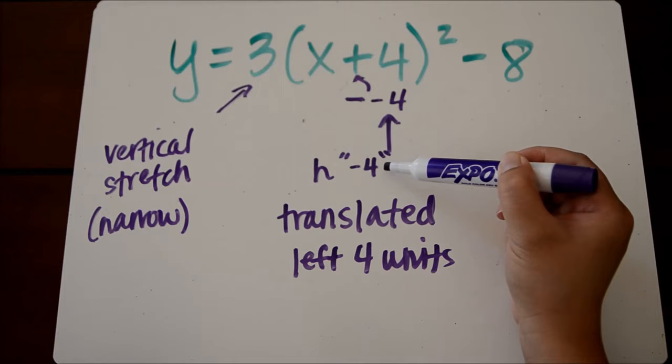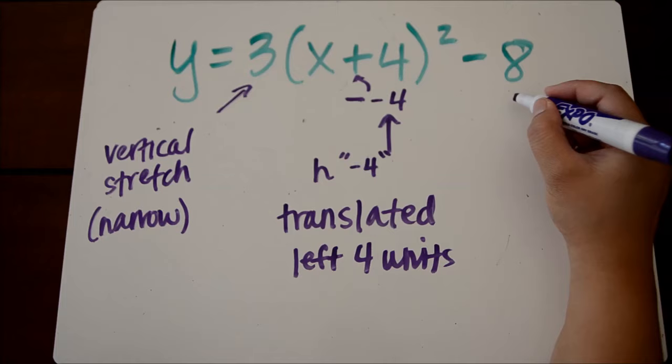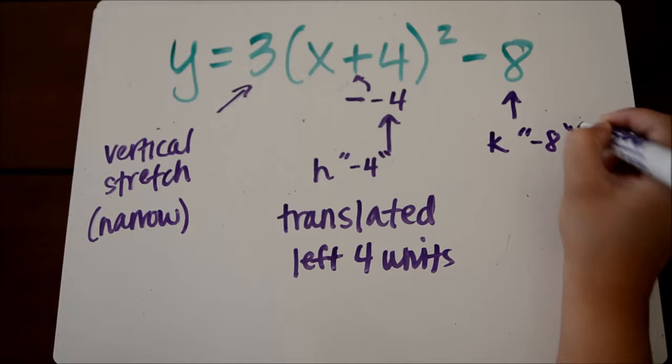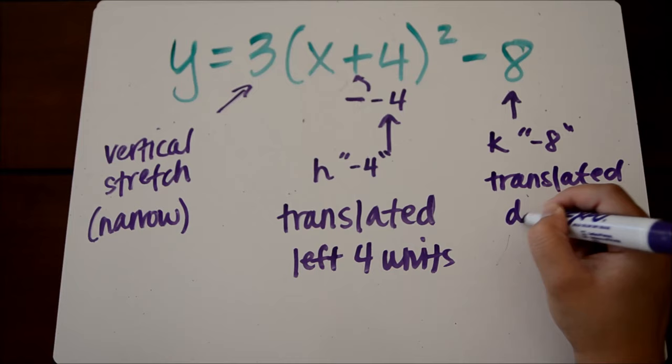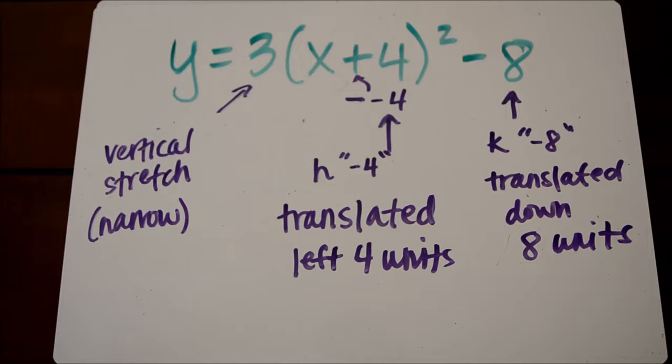So let's take a look at our k value. It's a negative 8, and our k value does what we think it should do. So this means our graph was translated, or shifts, down 8 units. So these are the 3 transformations given this equation of vertex form compared to the parent function.